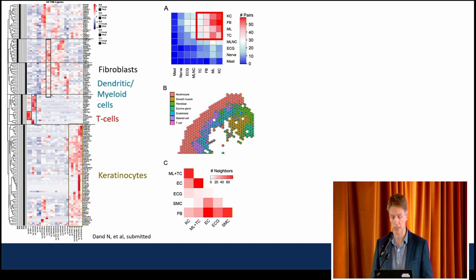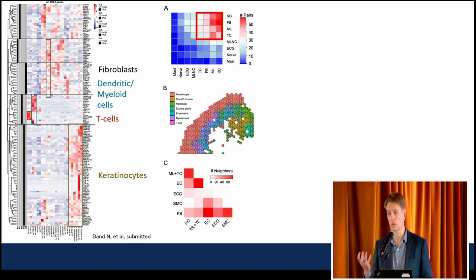These cell types are mapped back onto a spatial transcriptomic grid, and you can see that most of them are actually localized high up in the epidermis, right next to the epidermal-dermal junction. Using neighborhood analysis, they are in close proximity — co-localized in the disease process.